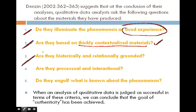Number three: are they historically and relationally grounded? We want to make sure the themes and factors we found through qualitative analysis are rooted in a historical and relational base. Number four: are they processual and interactional? The conclusion and evidence should be embedded in the whole process — not isolated — and should interact with other information as well.